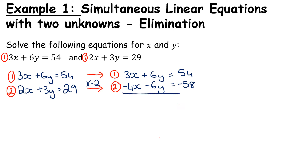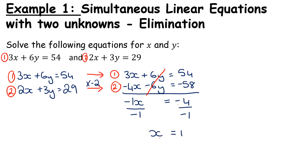I've changed the equation but kept the balance by multiplying absolutely everything by negative 2. Now I draw a line under it and add down the columns. I have 3x take away 4x, giving minus x. I have 6y take away 6y — that's zero, so those are eliminated. Then 54 take away 58 gives minus 4. To finish off, I divide both sides by minus 1, so I get x equals 4.